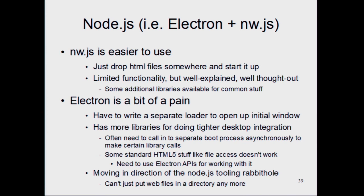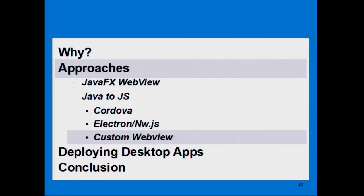Electron has really gone down the Node.js rabbit hole. For example, if you go to the Electron website, there's no download link. If you dig through GitHub you can find ways to download it, but on the website they instead have instructions for creating a Node.js project with a dependency on Electron that downloads it when you compile. Or you could just make a zip file I could download — but they really like this Node.js stuff. If you want to go down that rabbit hole, Electron is the route to go.